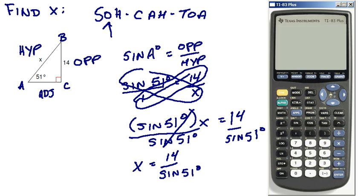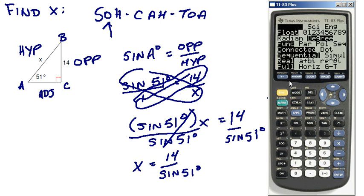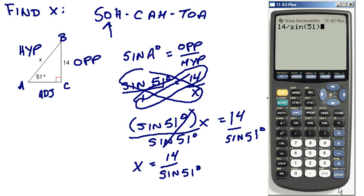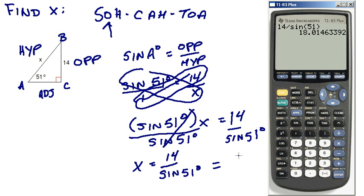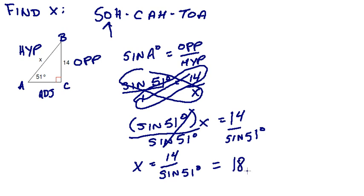Let's grab our calculator and turn it on. So 14 divided by the sine of 51 degrees. I did make sure — let's make sure — yep, we're in degree mode. So X is equal to 18.01. Our hypotenuse on this one would be 18.01.